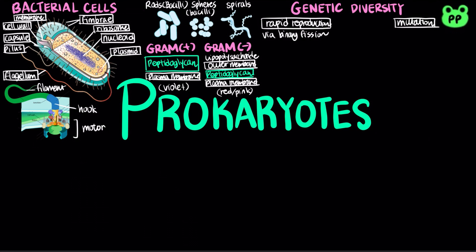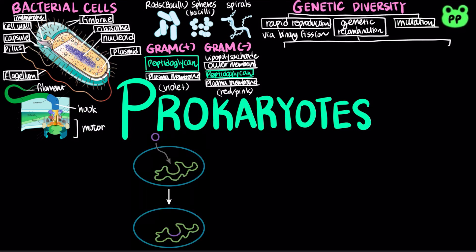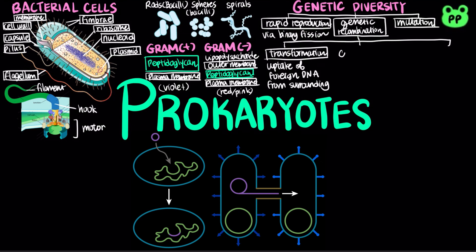The third factor contributing to prokaryotic genetic diversity is genetic recombination, which is the exchange of genetic material between different organisms. Prokaryotes undergo genetic recombination through three main mechanisms. First, a prokaryotic cell can take up and incorporate foreign DNA from the surrounding environment in a process called transformation. Second, conjugation transfers genetic material between bacterial cells through sex pili, which is the plural of sex pilus.